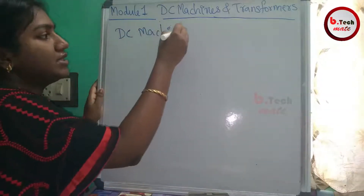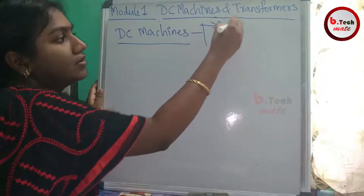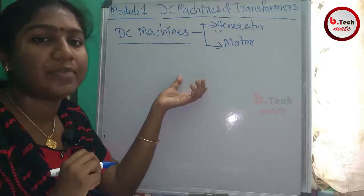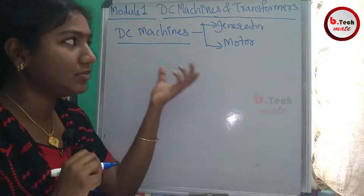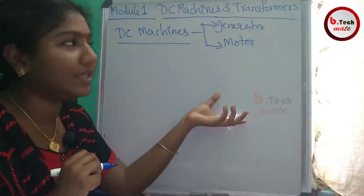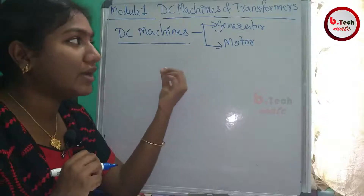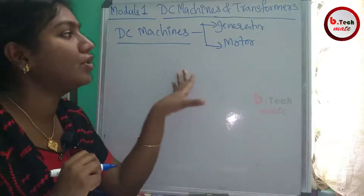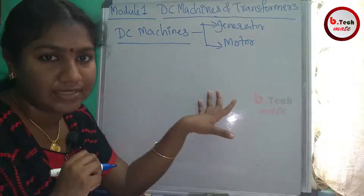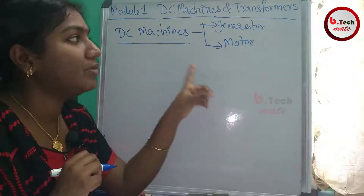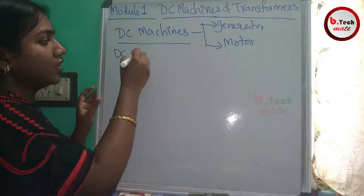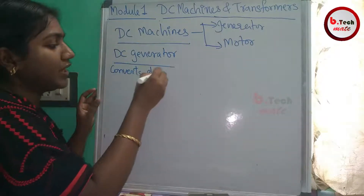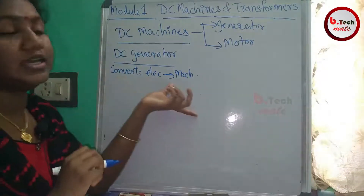DC Machines are of two types: generator and motor. Any DC machine can act as both a generator and a motor. A DC generator converts mechanical energy to electrical energy, while a DC motor converts electrical energy to mechanical energy.